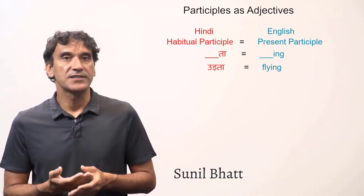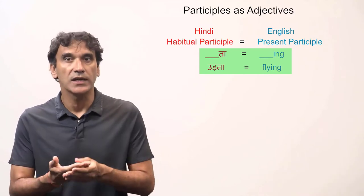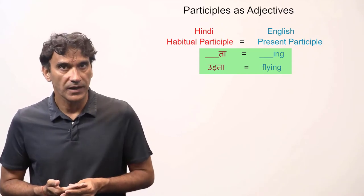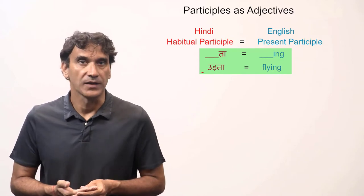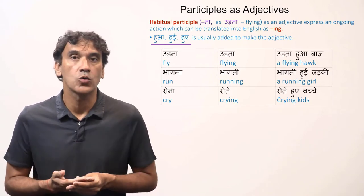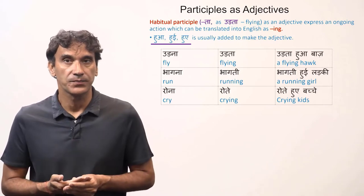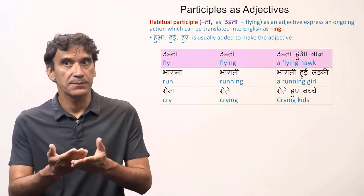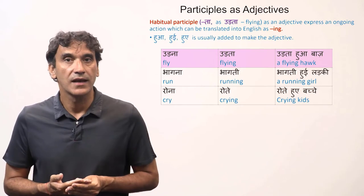The next grammar point is participle as adjectives in Hindi. The habitual participle that ends in 'ta', such as 'urta', is also an adjective — it expresses an ongoing or continuous action. It can be translated into English as a present participle ending in '-ing', so 'urta' would be 'flying'. The perfective participle of the verb 'hona' — that is 'hua', 'hue', and 'hui' — is usually added to the habitual participle to make it an adjective. For example, 'urna' means 'to fly', 'urta' is the habitual participle meaning 'flying', and 'urta hua baaz' means 'a flying hawk'.